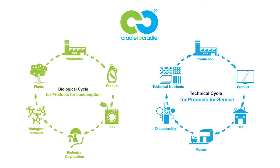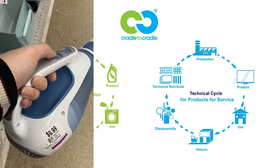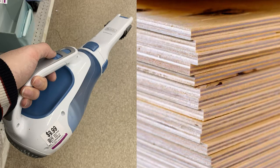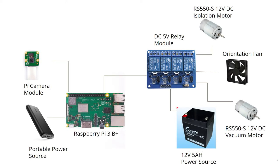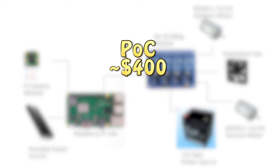While designing BirdieBot, we consider the materials that we are using. To satisfy Cradle to Cradle certified categories such as material reutilization, we use secondhand parts and materials that can be recycled after prototyping. Most of our electrical components will be reused in the final prototype. The total cost of our proof of concept prototype is $400, and we estimate that the final prototype will cost around $600.